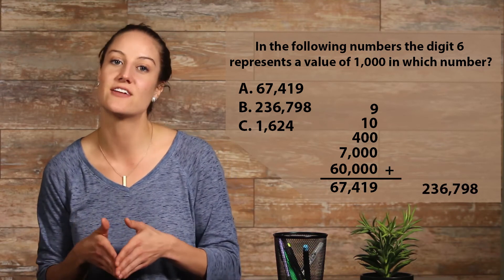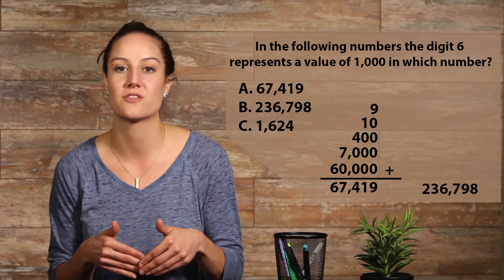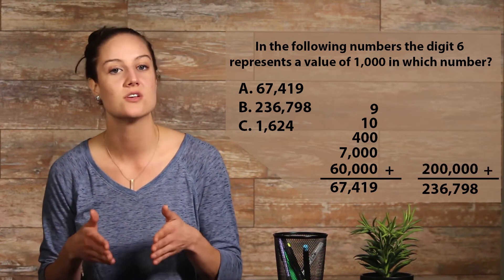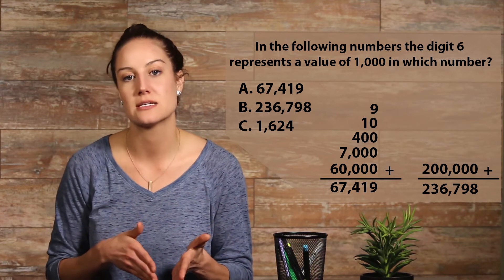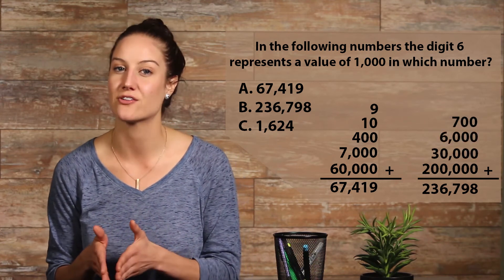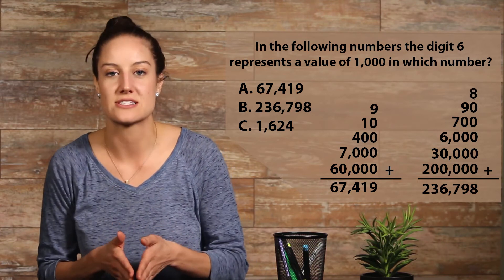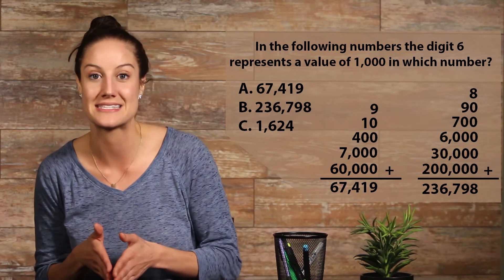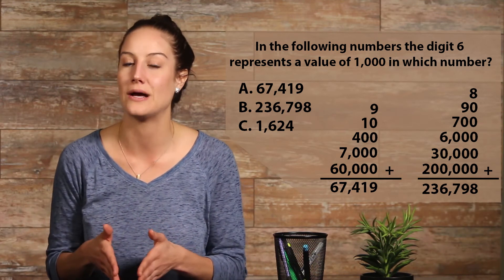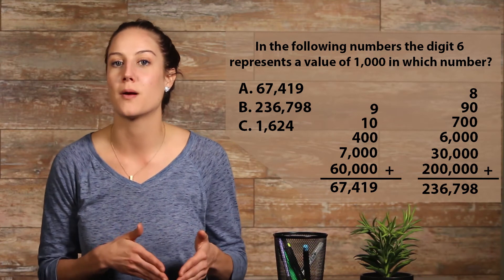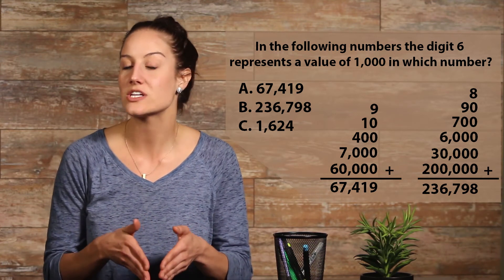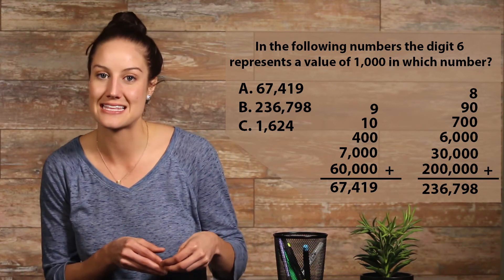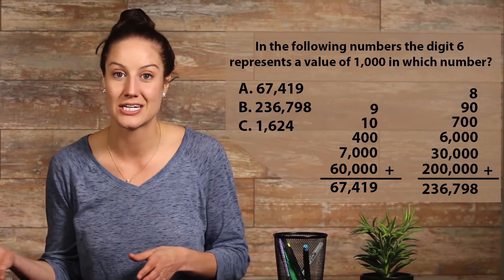So let's move on to choice B, 236,798. As we get more and more familiar with finding place values, it will become second nature, but for now we'll continue to expand our numbers. So we have 200,000 plus 30,000 plus 6,000 plus 700 plus 90 plus 8, or 2 hundred-thousands, 3 ten-thousands, 6 thousands, 7 hundreds, 9 tens, plus 8 ones. Let's look back and see what our problem was asking for. The digit 6 in which number represents a value of 1000? We can see that we have a 6 in the thousands place, so B is our answer. Great work, guys!